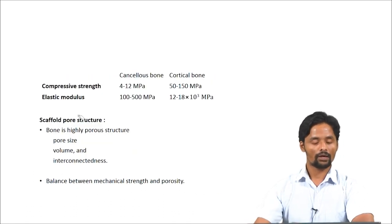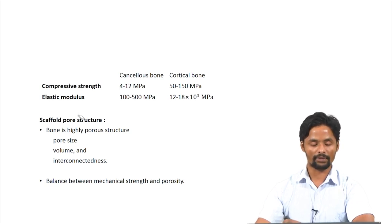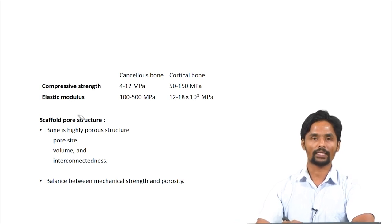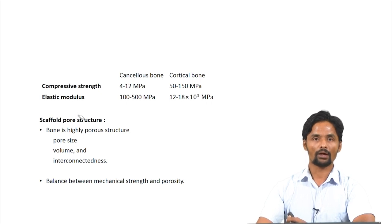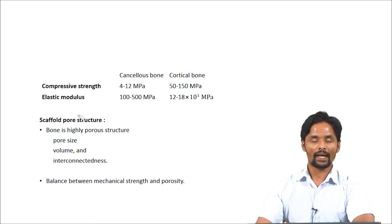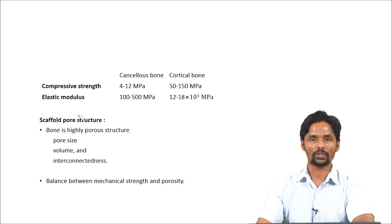Here are the compressive strength and elastic modulus of cancellous bone and cortical bone. The second most important parameter while designing the scaffold for bone tissue engineering is porosity. Bone is highly porous in nature and is defined by three different terminologies: pore size, pore volume, and interconnectivity between the pores. While designing scaffolds for bone tissue, we should consider all three parameters. Balancing high mechanical strength with high porosity is a real challenge in bone tissue engineering.